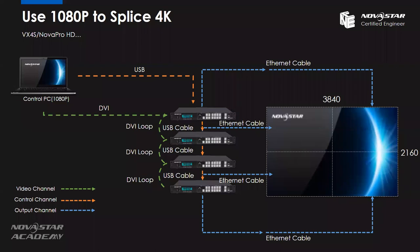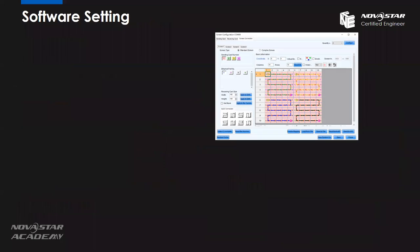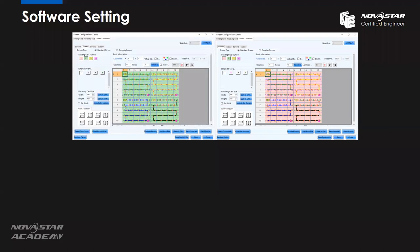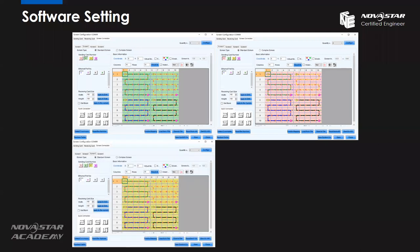For loading the 4K screen, we divide the screen into a 2x2 area. This VX4S loads the top right, the next loads the top left, then bottom left, and bottom right — the same principles as with M-Control 660. For the software settings, it's the same: we create four screens, with four tabs in the screen connection interface. The screen connection is basically exactly the same as with M-Control 660.